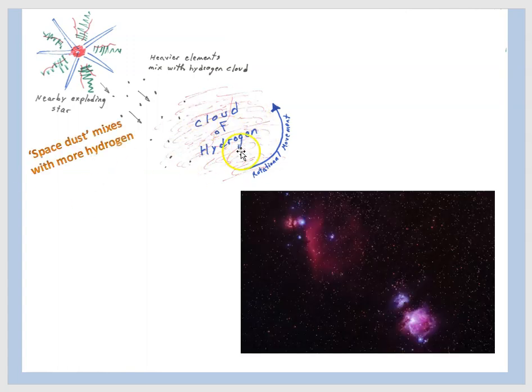This cloud here, the cloud of hydrogen mixed with the heavier elements, this is what we mean by space dust. Gas and dust is a nebula. So a nebula is a giant cloud of gas, mostly hydrogen and some helium, mixed with this space dust, which would be the heavy elements forged by stars and ejected out into space by supernova.